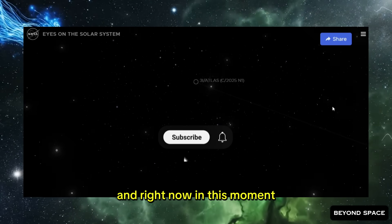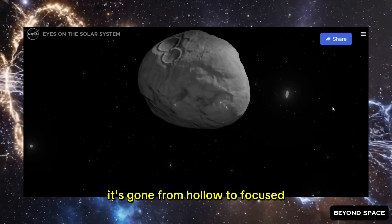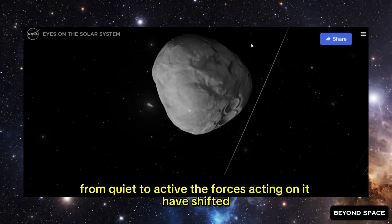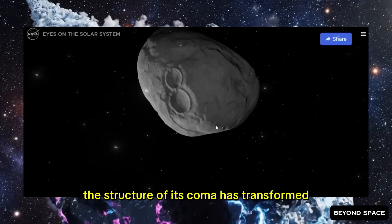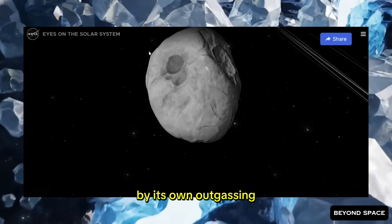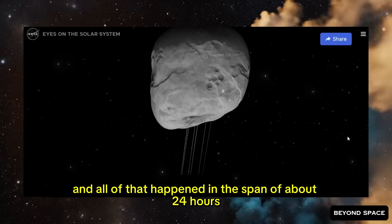And right now, in this moment, what we're seeing is a comet that has changed again. It's gone from hollow to focused, from diffuse to directional, from quiet to active. The forces acting on it have shifted. The structure of its coma has transformed. The way it's moving through space has been altered by its own outgassing. And all of that happened in the span of about 24 hours.